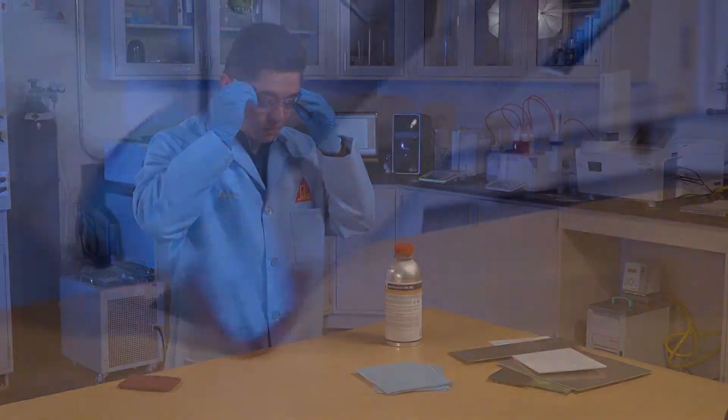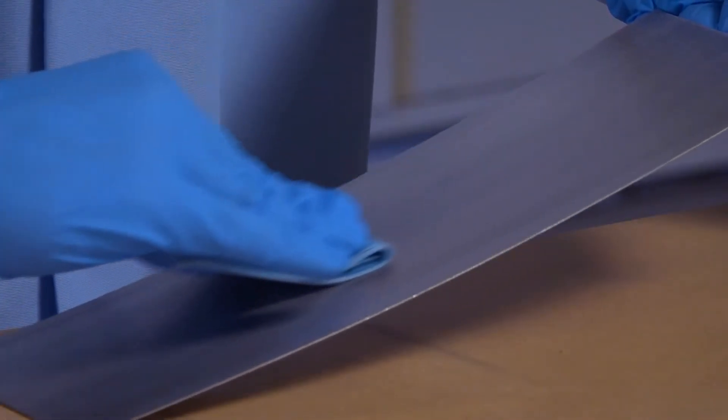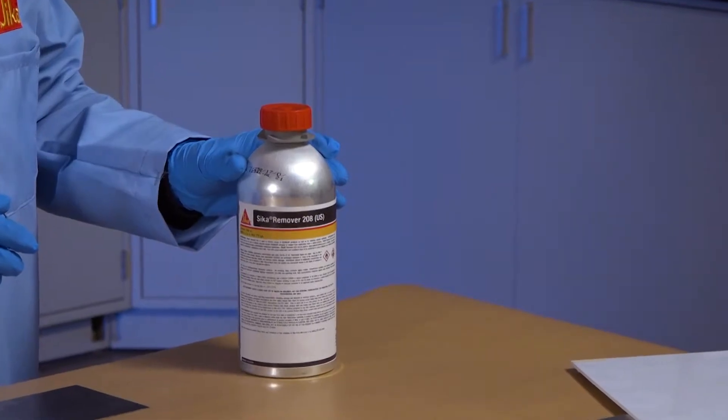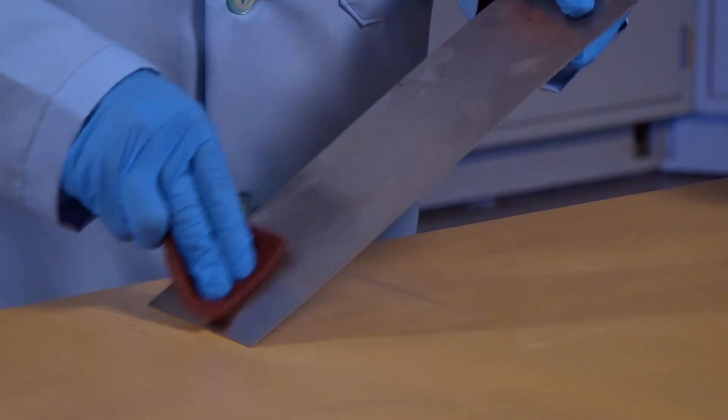Many substrates can be prepared by simply scuffing lightly using an abrasive pad followed by vacuuming, using a dry wipe, or cleaning with a suitable solvent. The method used must be selected according to the specific nature and composition of the substrate.